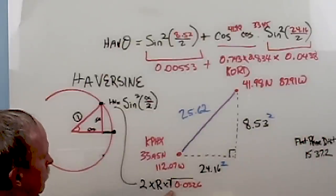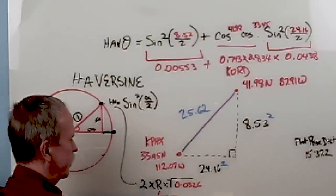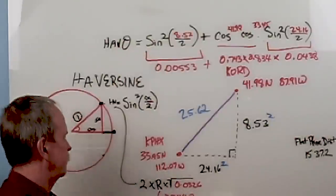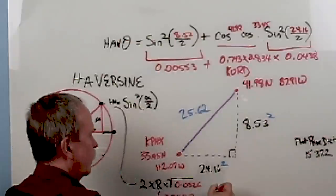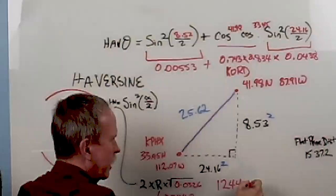What do we get? We get 1,244 nautical miles.